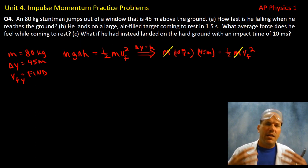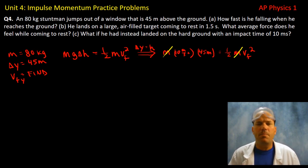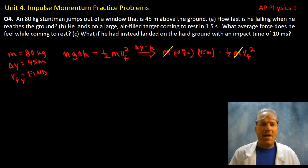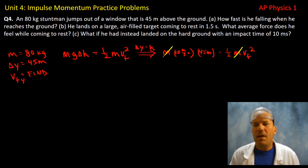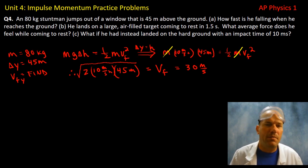With the acceleration due to gravity, multiplying both sides by two and taking the square root, we find the final velocity of the stunt man to be 30 meters per second. That is the magnitude of the velocity — the answer to part a.